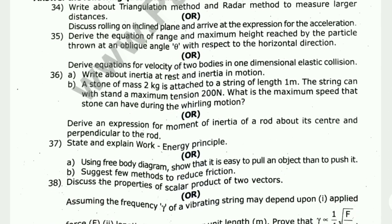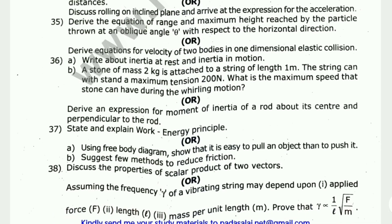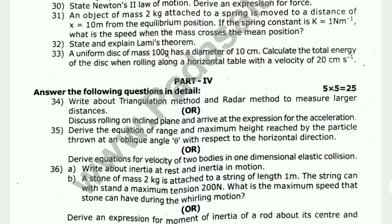Next, part 4, 5 marks — 5 questions for 25 marks. All have a choice. Question 34: Write about triangulation method and radar method to measure larger distances. Or discuss rolling on an inclined plane and arrive at the expression for the acceleration.